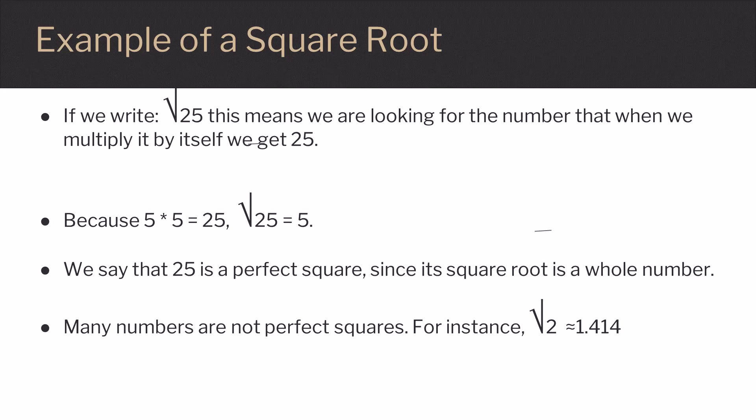Many numbers are not perfect squares. For instance, if you put the square root of 2 into your calculator, you get a long decimal answer that is about equal to 1.414.